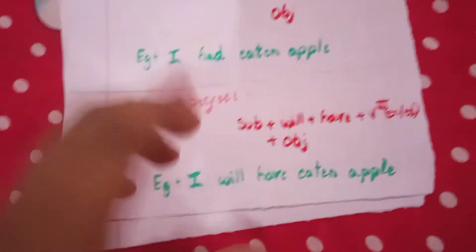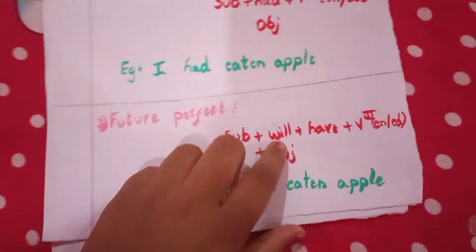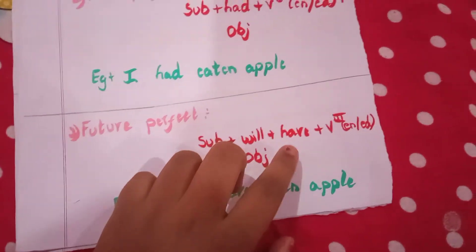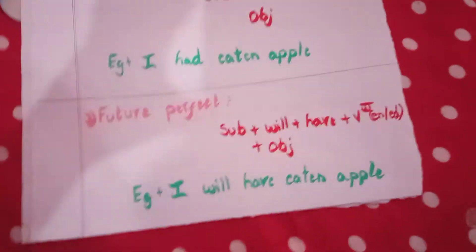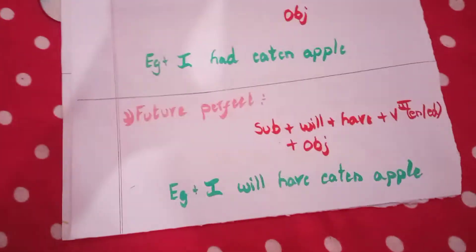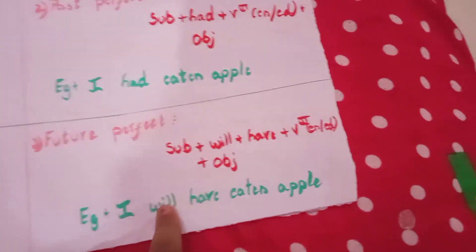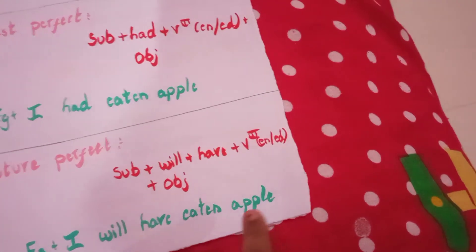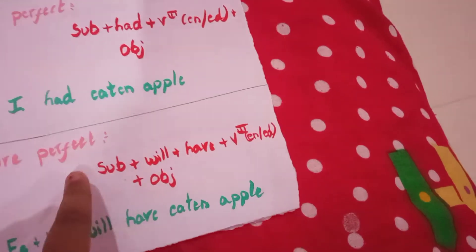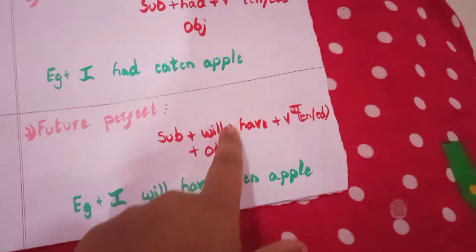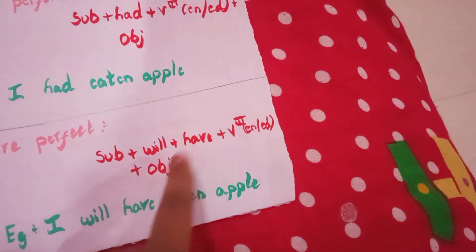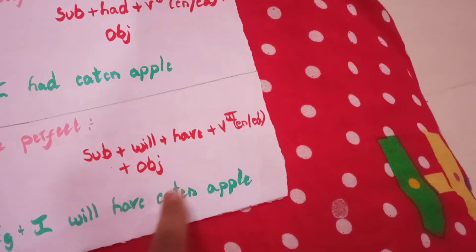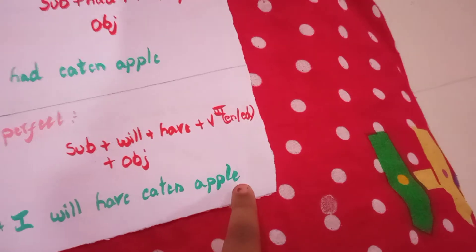Future perfect: subject plus will plus have plus V3 plus object. Example: 'I will have eaten apple.' Here 'I' is the subject, 'will have' is the auxiliary, 'eaten' is V3, and 'apple' is the object.